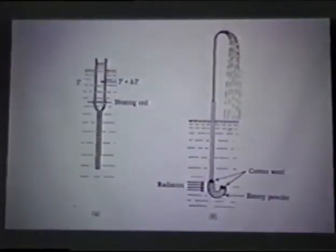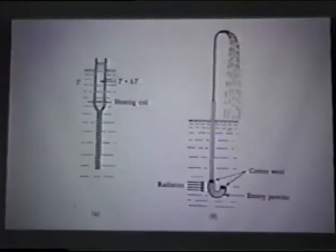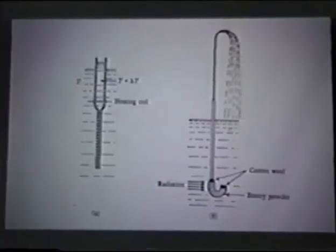One thing you can do is make a superleak, which is very tightly compressed powder, which is practically impervious to flow of normal fluid. But superfluid can flow through it like a sieve, because the superfluid component has no friction, zero viscosity.